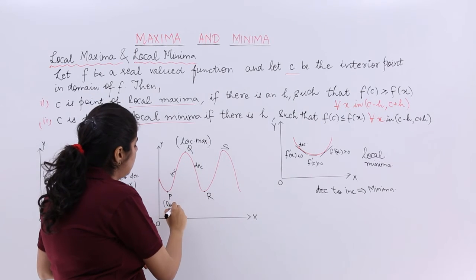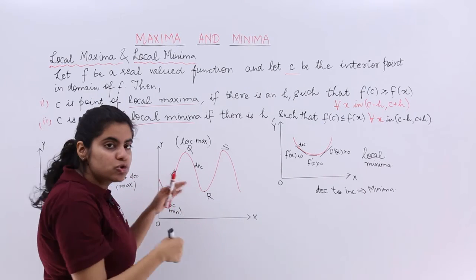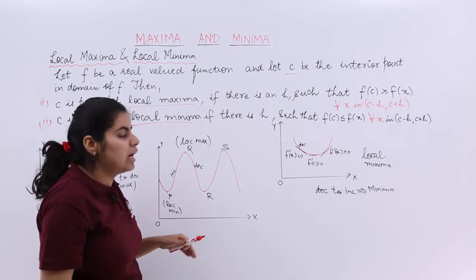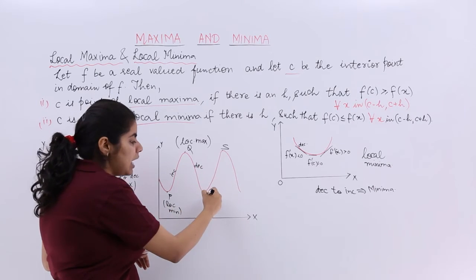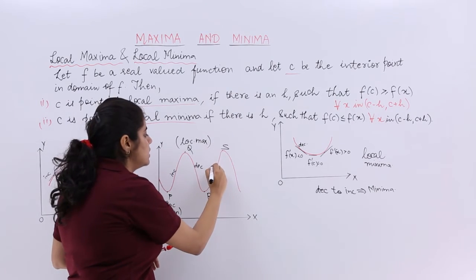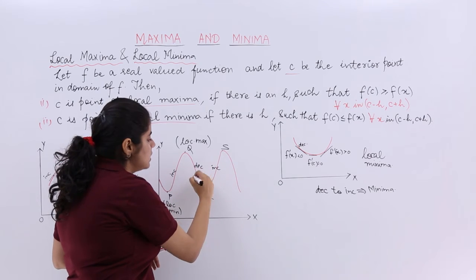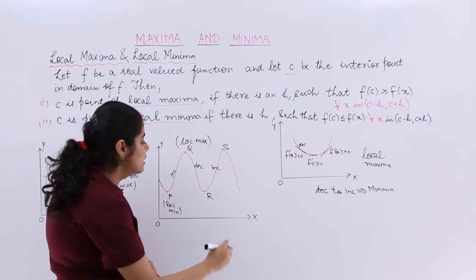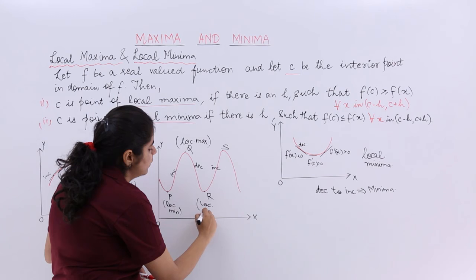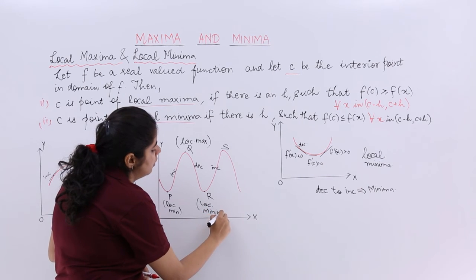And wherein this is local minima. Now you get it. How to solve it? How to understand with the help of graph? Again, this is decreasing. R comes and then the graph again increases. So decreasing to increasing. Decreasing to increasing is minima. So it is local minima or relative minima.